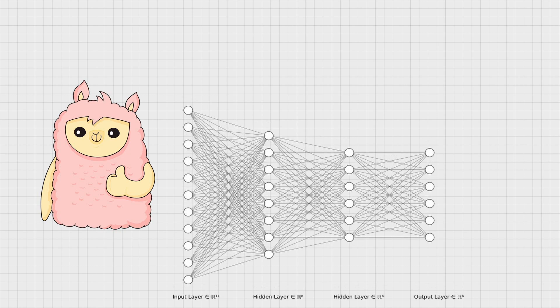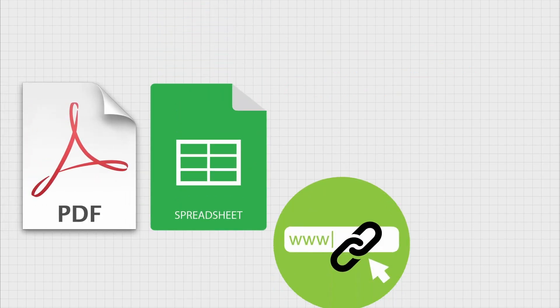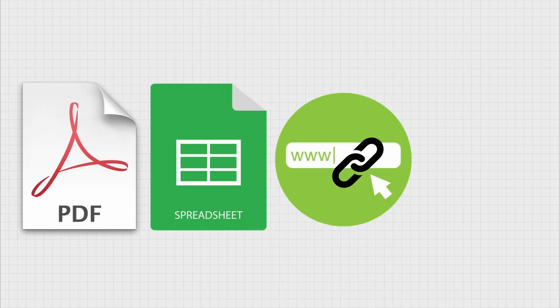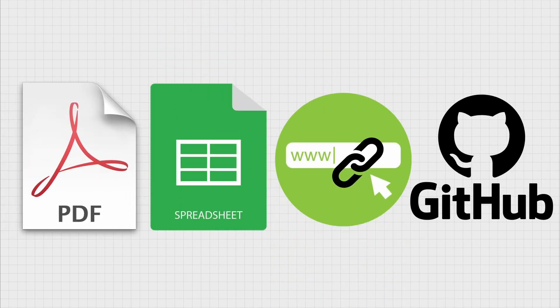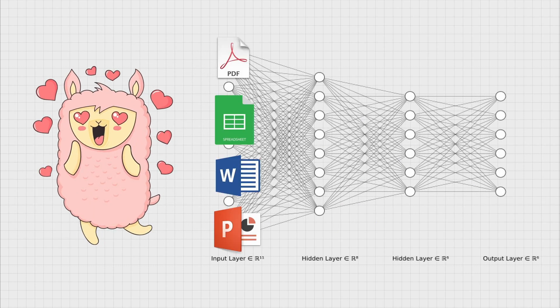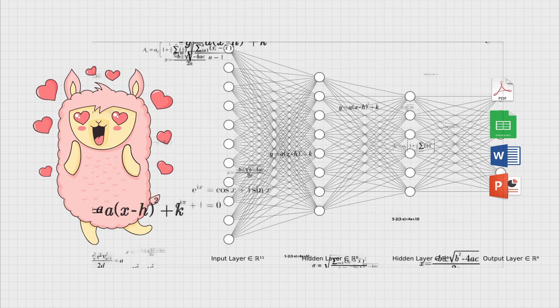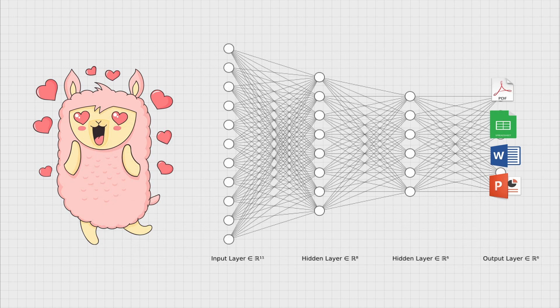Retrieval-augmented generation, or RAG, is basically providing the pre-trained model with additional information from external sources of data — for example, a PDF file, spreadsheet data, a web link, or even a code repository — and asking the model to prioritize the external source of data and base the responses on the actual information in those documents.